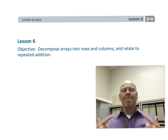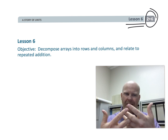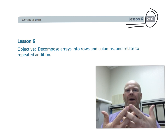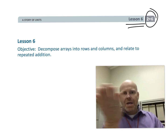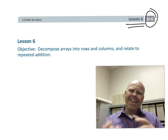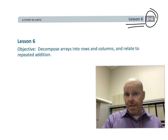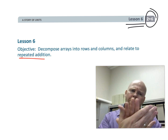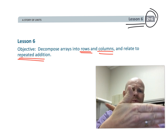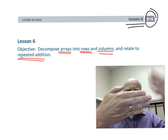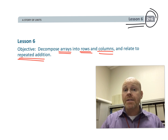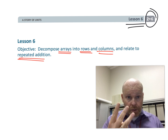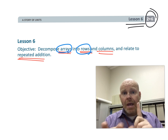This is second grade, module six, lesson six. Students are going to be looking at arrays, and we're going to be looking at more details about those arrays. We're going to be looking at rows and columns, and we're going to be connecting those concepts to repeated addition — the idea that depending on the way we look at an array, we can see repeated addition going one way or the other. We're giving students practice with three really important vocabulary words: array, rows, and columns.